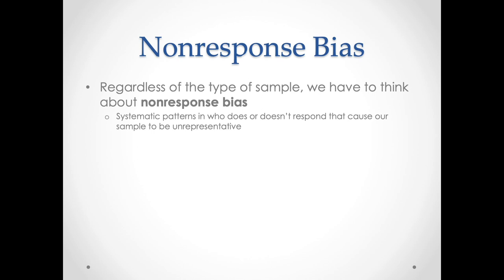Occasionally, people look at the response rate — what percentage of people responded — to capture non-response bias. That's an okay indicator, but it's not perfect. You should think less about what the rate of response is, and more about whether or not the population of the sample is fully representative of the general population. Response rates have gone down overall, particularly as populations experience sampling fatigue, and a low response rate doesn't necessarily mean there's non-response bias, just as a high response rate doesn't mean there isn't. Instead, we need to think about whether there are systematic, patterned reasons why people are choosing not to reply, and what we can do to alleviate that.